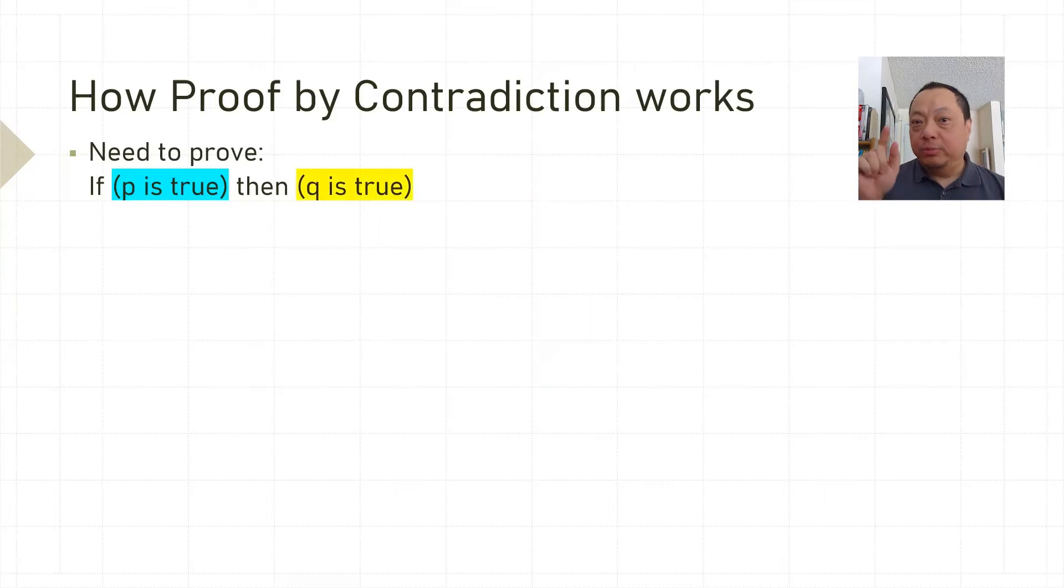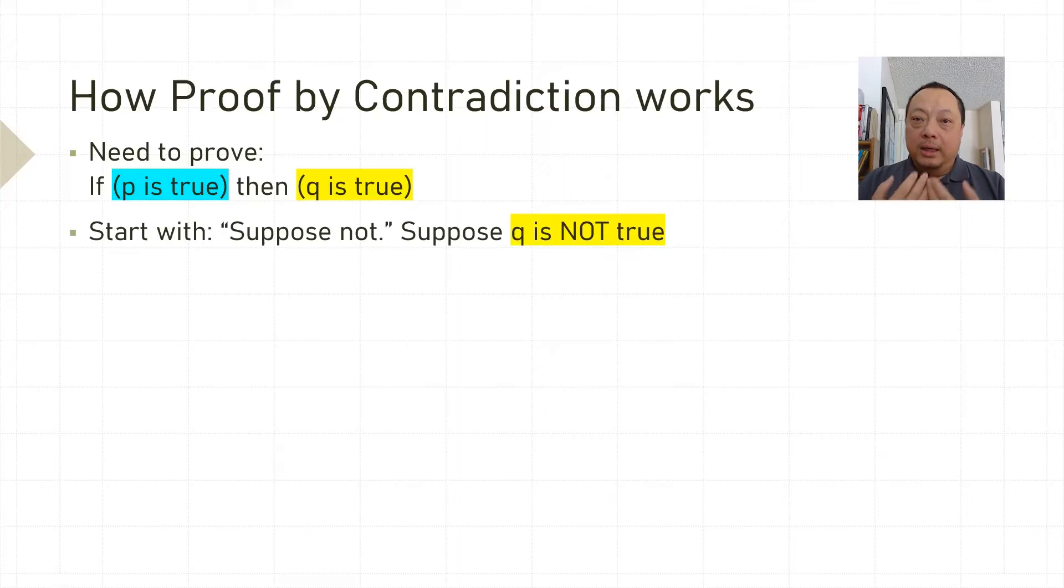Let's highlight the two parts so we can keep track. The given premise is P is true. The conclusion that we need to prove is Q is true.